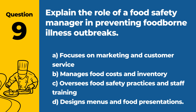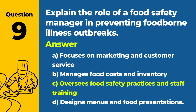Question 9: Explain the role of a food safety manager in preventing foodborne illness outbreaks. a. Focuses on marketing and customer service. b. Manages food costs and inventory. c. Oversees food safety practices and staff training. d. Designs menus and food presentations. Answer: c. The food safety manager plays a crucial role in preventing foodborne illness outbreaks by overseeing food safety practices and conducting staff training.